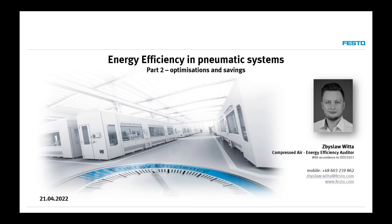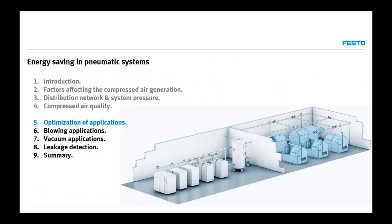Hello everyone. We are gathered here for the second time to talk about energy efficiency in pneumatic systems. Today we'll be talking more about optimizations and savings. On the last part, we focused more on air generation and what we can do globally for our system. But in today's part, we'll talk about local actions that we can make, even right now, going back to our plant to create at least some savings that in time will generate money saved for the company.